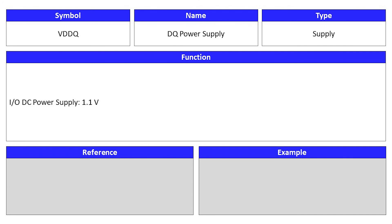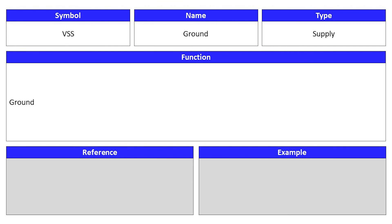The DQ power supply is a supply with symbol VDDQ. This is an IO/DC power supply of 1.1 volts. The power supply VDD is a core power supply of 1.1 volts. Ground is considered a supply type with symbol VSS. The DRAM activating power supply has symbol VPP, and it is a DRAM activating power supply of 1.8 volts.